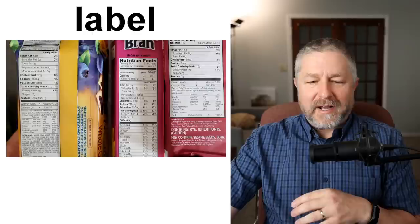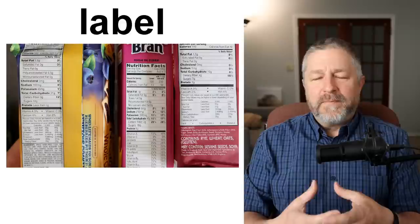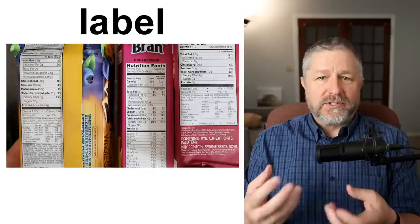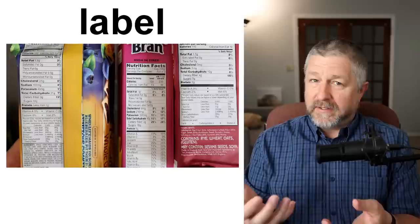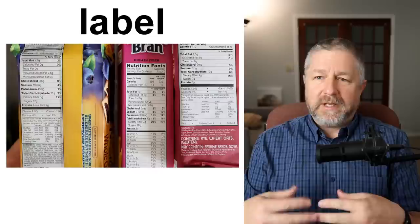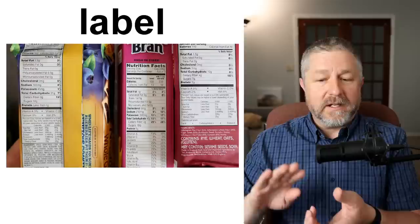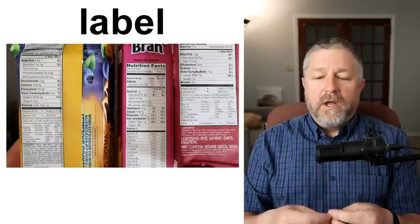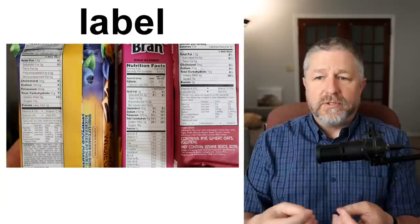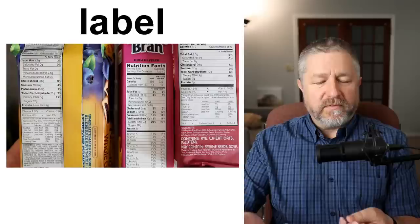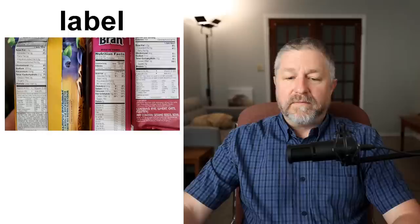First one: label. Often when you buy something, there will be information on the side, and we call that the label. If you have a can of soup, it has a label. If you want to know how much salt or sugar is in your soup, you can read the label. In English we often say to people, 'Read the label.' If someone is allergic to something, you might say, 'You better read the label before you eat that.'